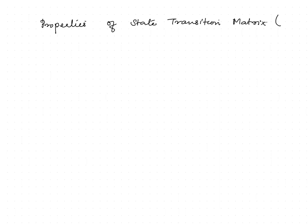Today's session is regarding properties of the state transition matrix. In order to discuss these properties, we consider an autonomous system represented by x-dot equal to Ax. This equation is also called a homogeneous equation.